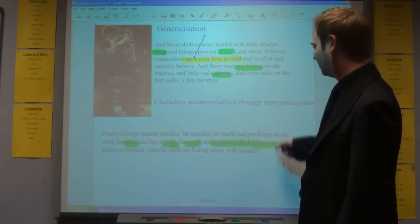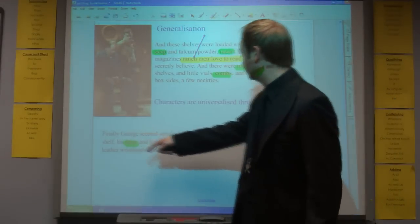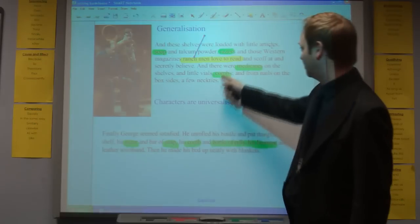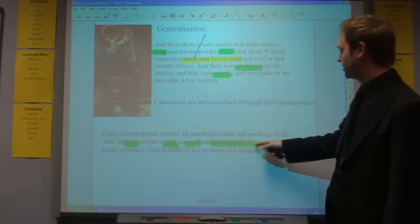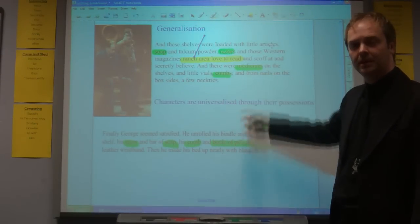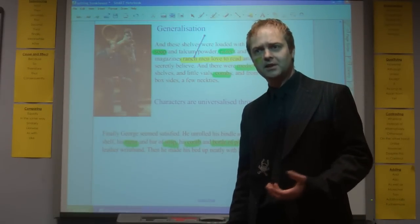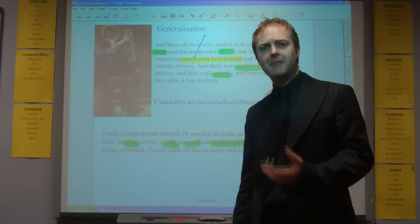We really get a sense of that when you compare this general description to what happens when George starts to put his items into the apple box ascribed to him later in the chapter. George seems satisfied. He unrolled his bindle and put things on the shelf: his razor, comb, bottle of pills, liniment. He's exactly the same as everybody else. There's that uniformity. He's not an individual. He's just one of many ranchmen.